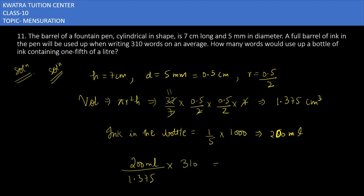We know that the volume is 1.375, and then multiply it with the words it can write. Solving this will give about 4590.90 words. If you want to write the approximate